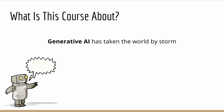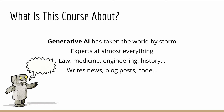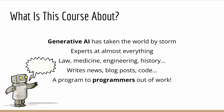ChatGPT and its successors, like GPT-4, are experts at almost everything, spanning from law, medicine, engineering, and statistics, to history and philosophy. It can write news articles, blog posts, and even computer code. Nobody could have predicted that instead of putting truck drivers out of work, AI — which is just a computer program — would be replacing the very developers who make computer programs.